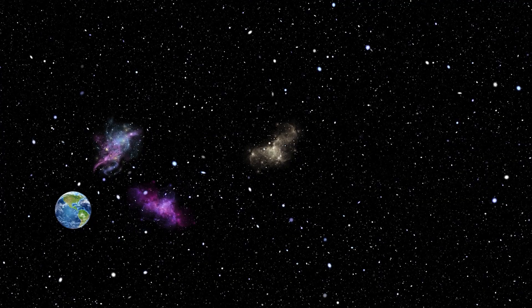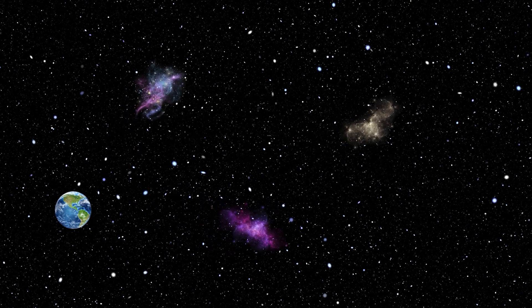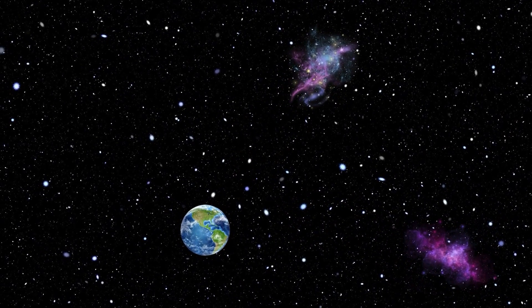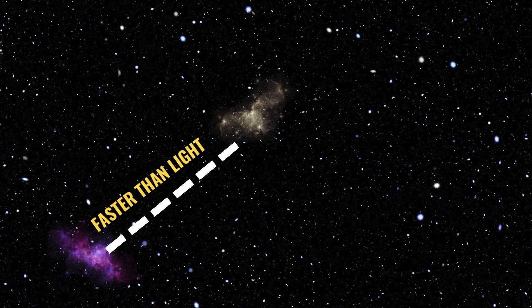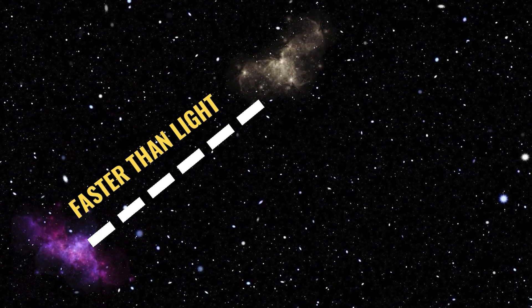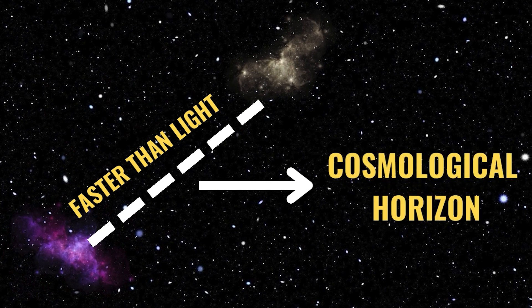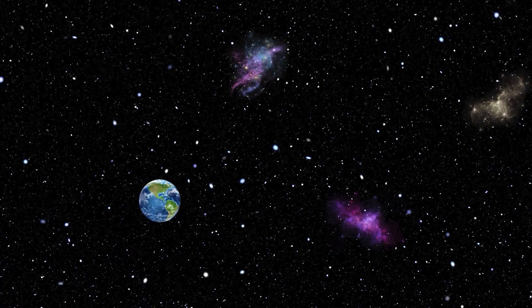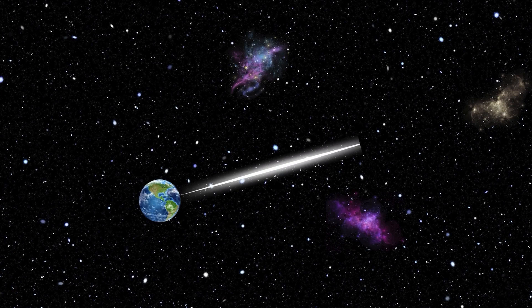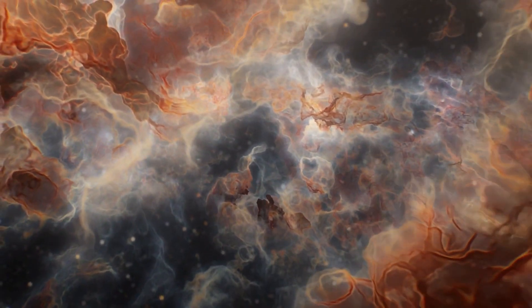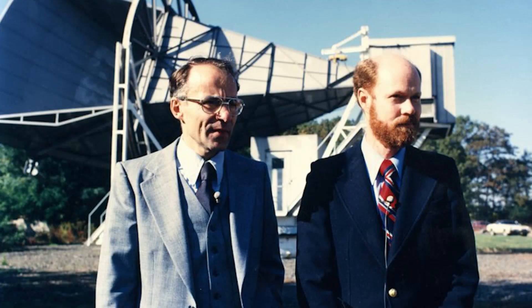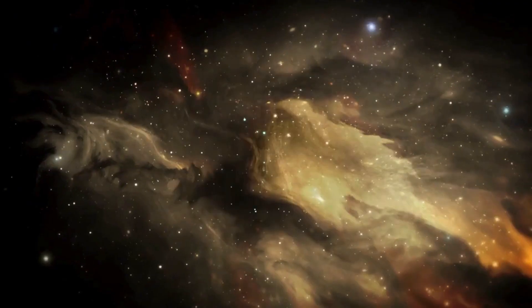Just like in this example, galaxies move away from each other due to the expansion of space. Nearby galaxies are less affected, while distant ones move apart much faster — in fact, this rate of separation can exceed the speed of light beyond a certain point. This distance is called the cosmological horizon. At this point, the expansion of the universe is so fast that even light signals sent to these galaxies cannot catch up with them. Thanks to the cosmic microwave background radiation that spread shortly after the Big Bang, we can understand the universe's expansion rate.